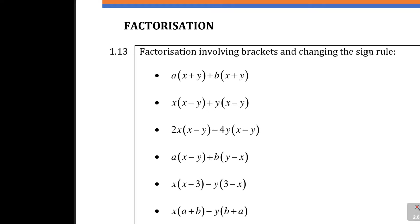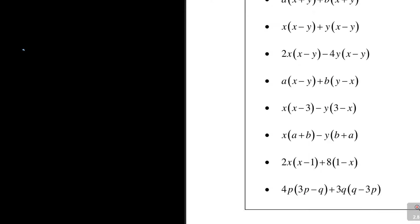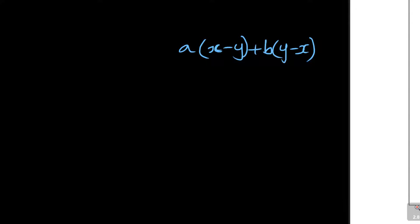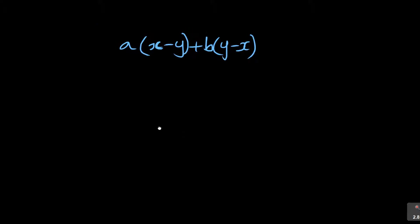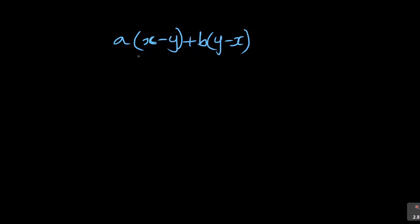Now we are moving to the part called changing the sign rule. Look at this question: A times bracket X minus Y, plus B times bracket Y minus X. I want to do the same factorization, but the second bracket is not X minus Y — it's Y minus X. That's where they say change the sign rule.